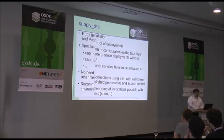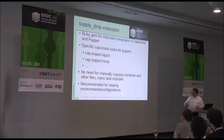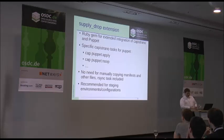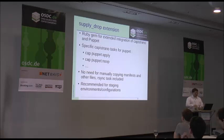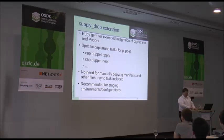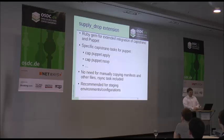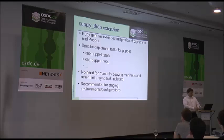There are some disadvantages in Capistrano and Puppet too, especially because you have to copy over your manifests again and again. You have to take care that all your manifests are there before you start your Puppet run. There's some more to it if you do research online, because we weren't the first to have this idea. There's an extension — a Ruby gem — that can be used with Capistrano and Puppet, which is called SupplyTrop.